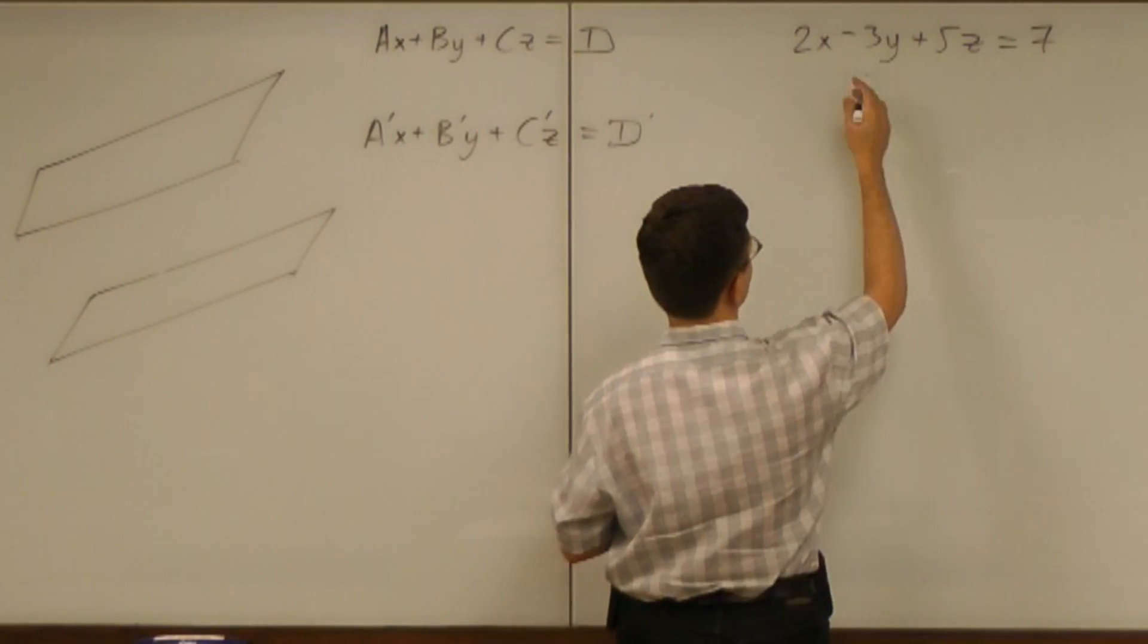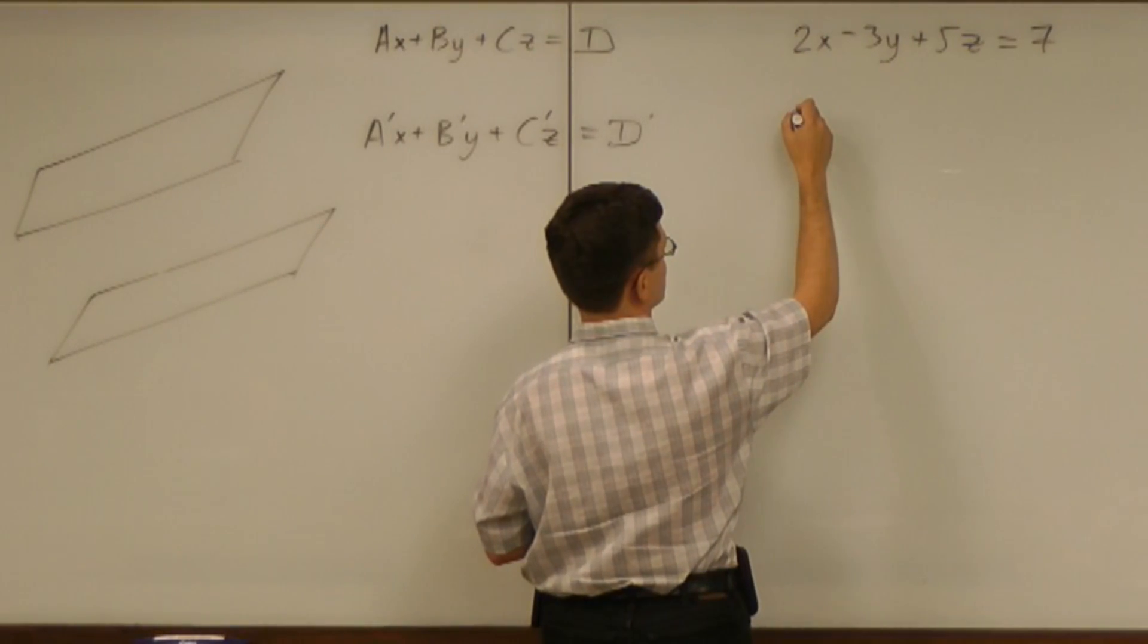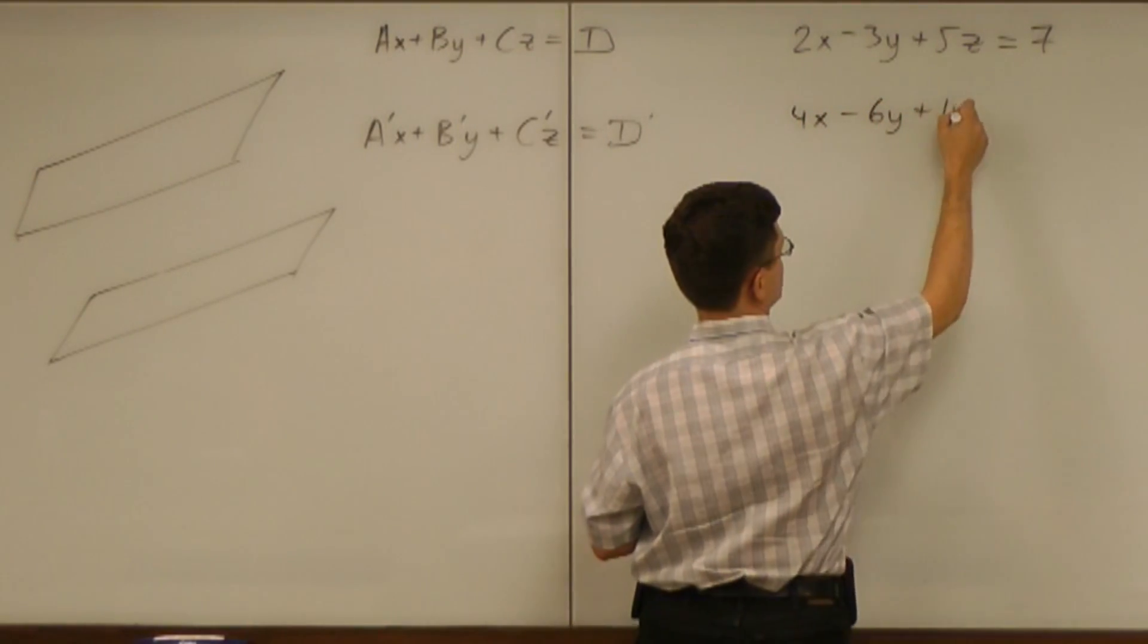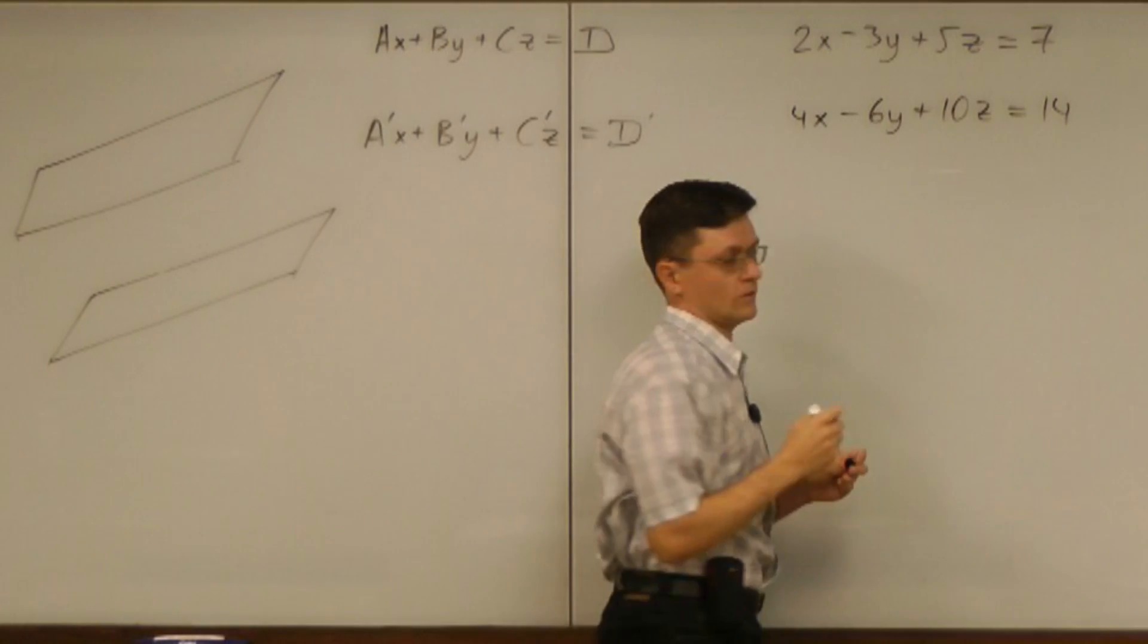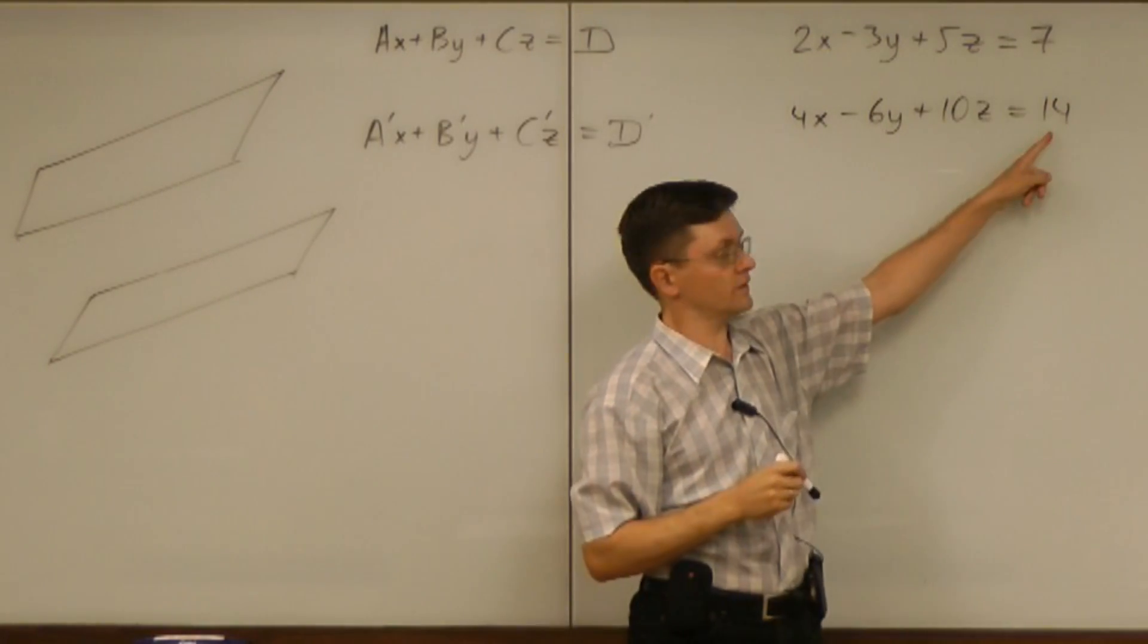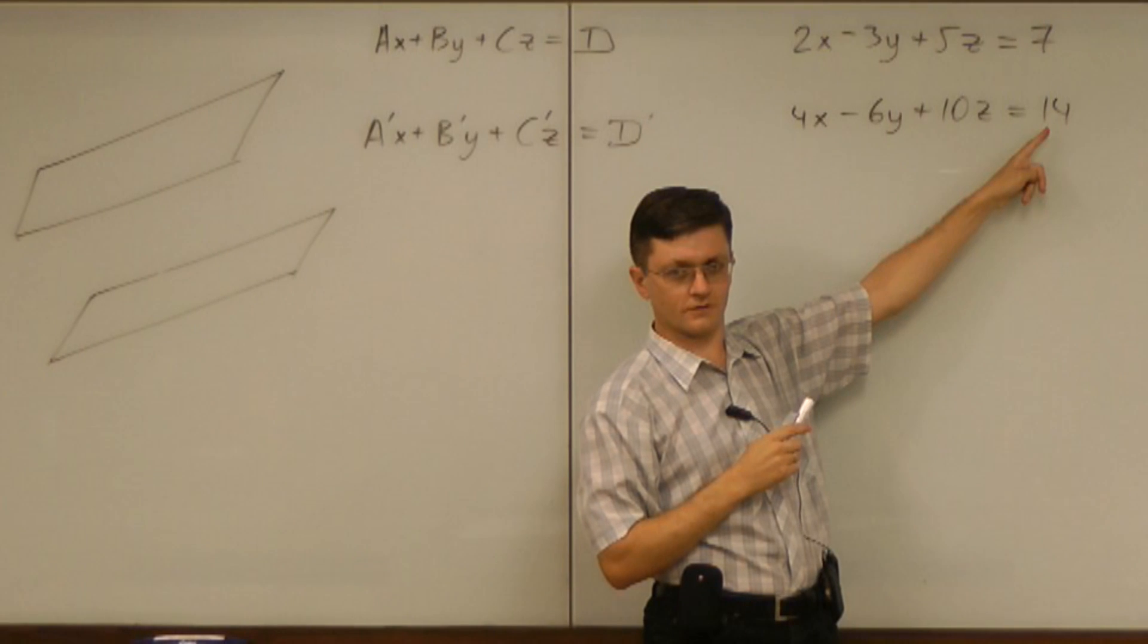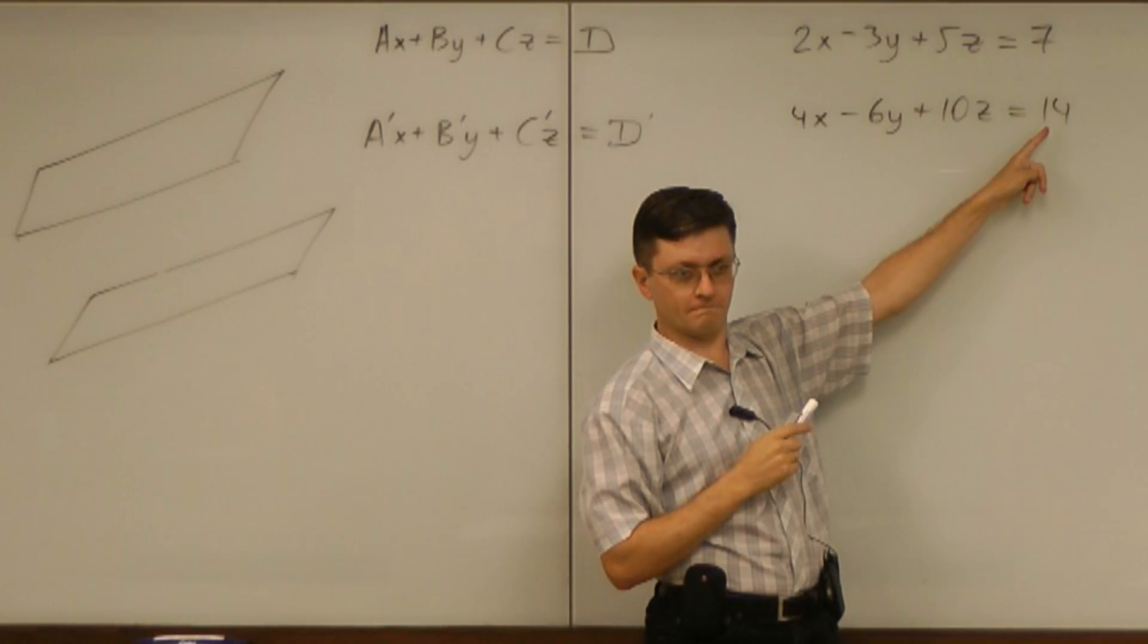What if I take the equation 4x minus 6y plus 10z equals 14. What's the meaning of 14? Is that also distance to the origin? It has no meaning yet.